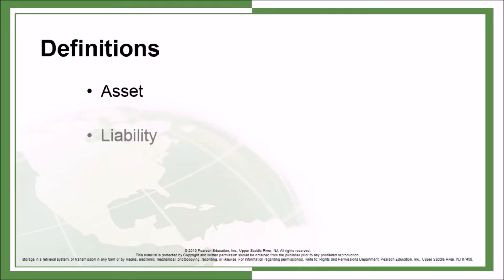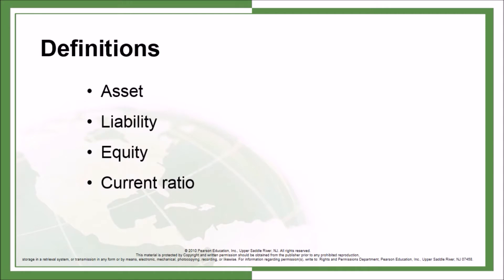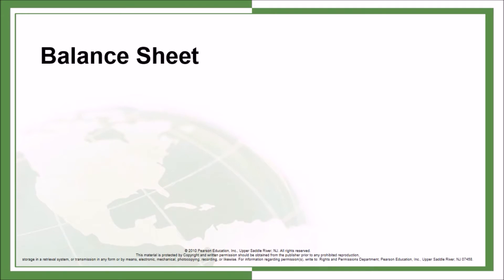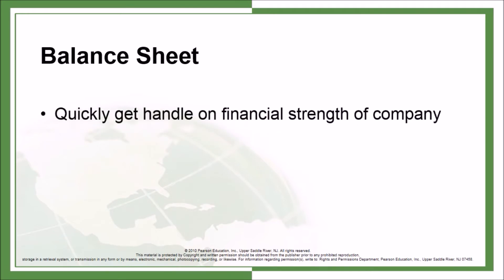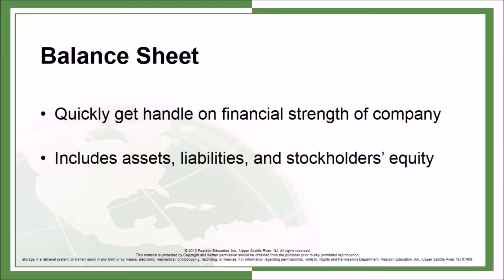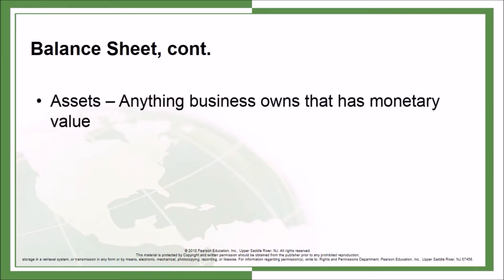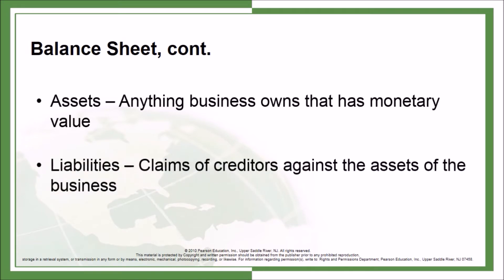Definitions: Asset, liability, equity, current ratio, and debt to equity ratio. Balance sheet: quickly get a handle on the financial strength of a company. It includes assets, liabilities, and stockholders' equity. Assets are anything a business owns that has monetary value. Liabilities are claims of creditors against the assets of the business.